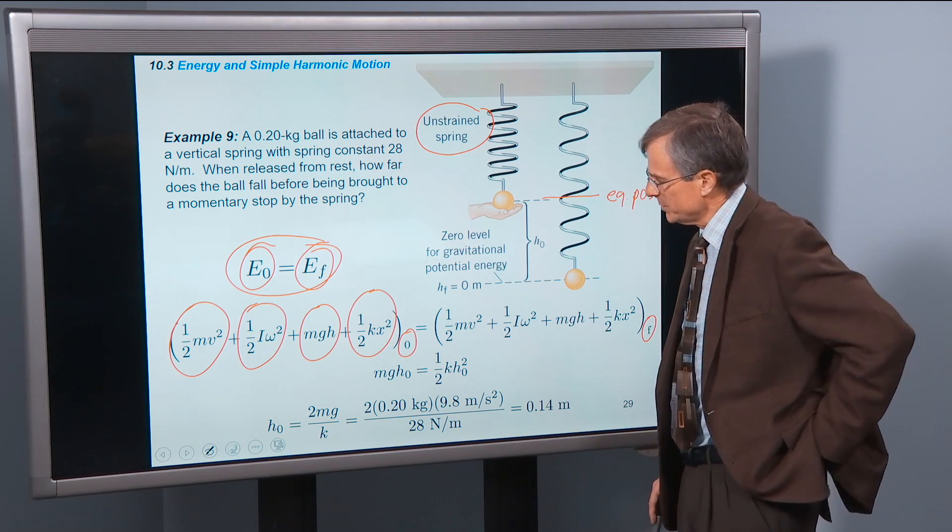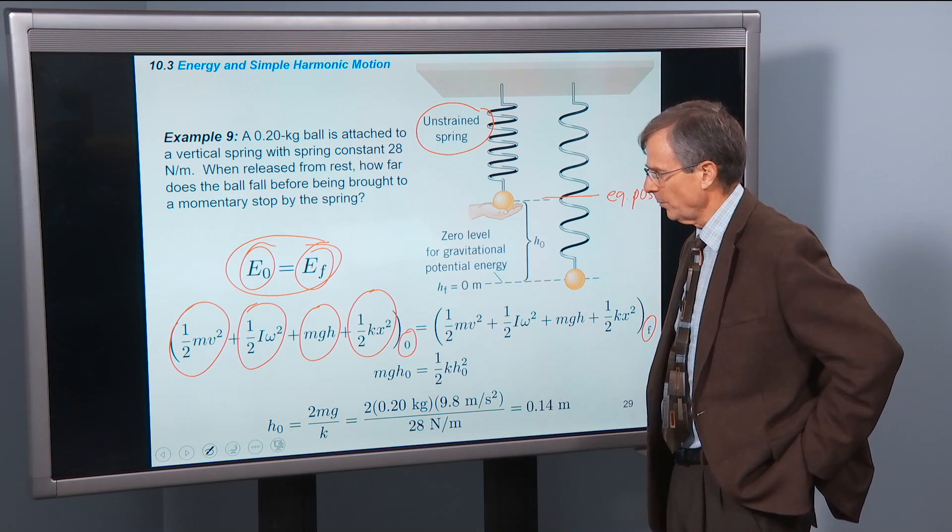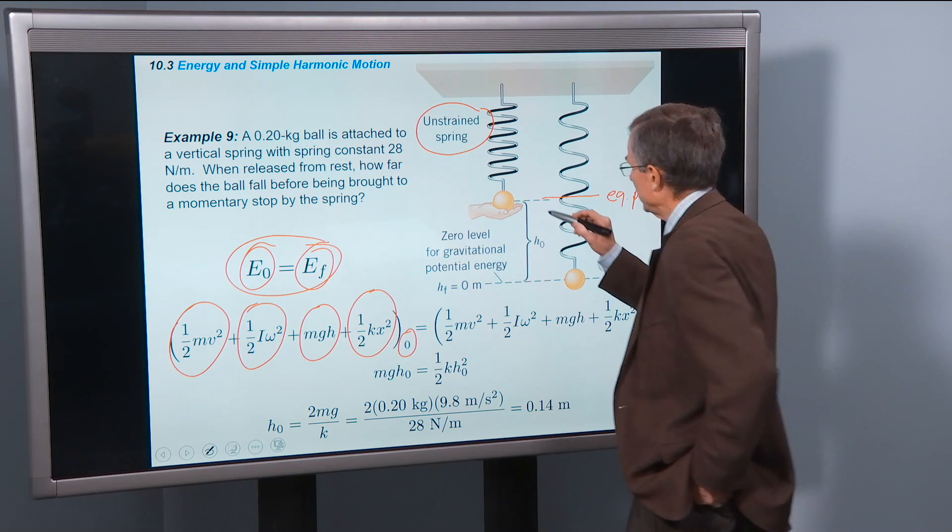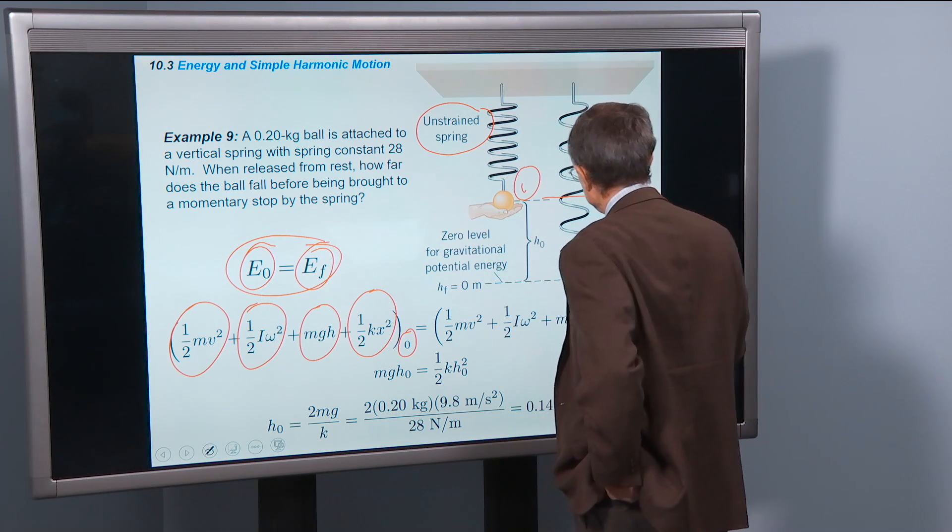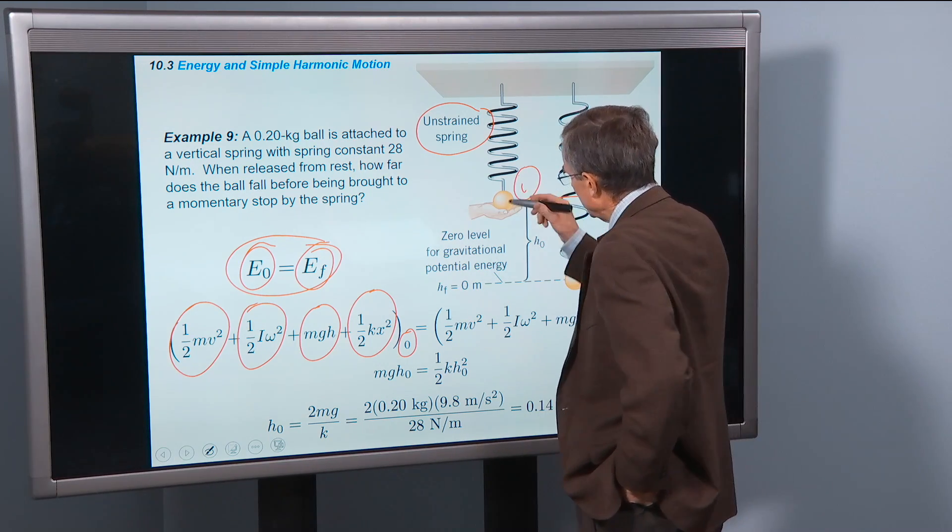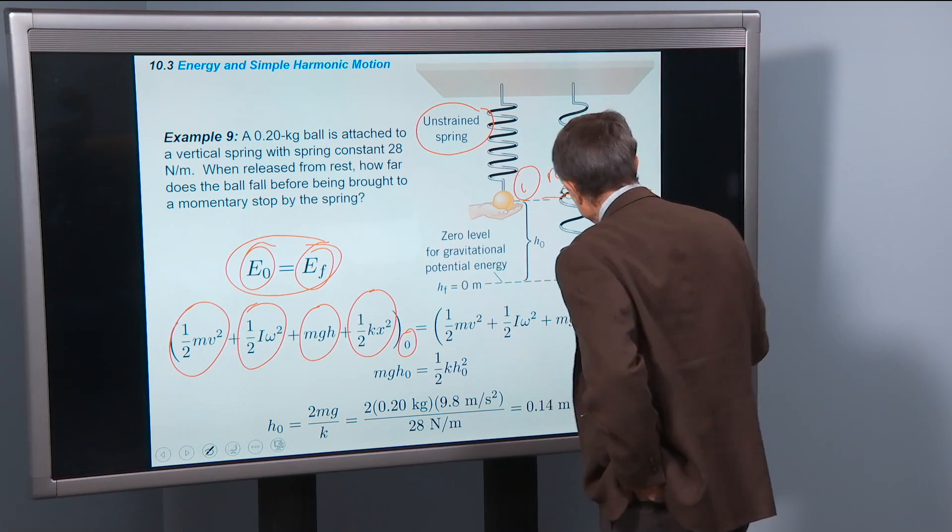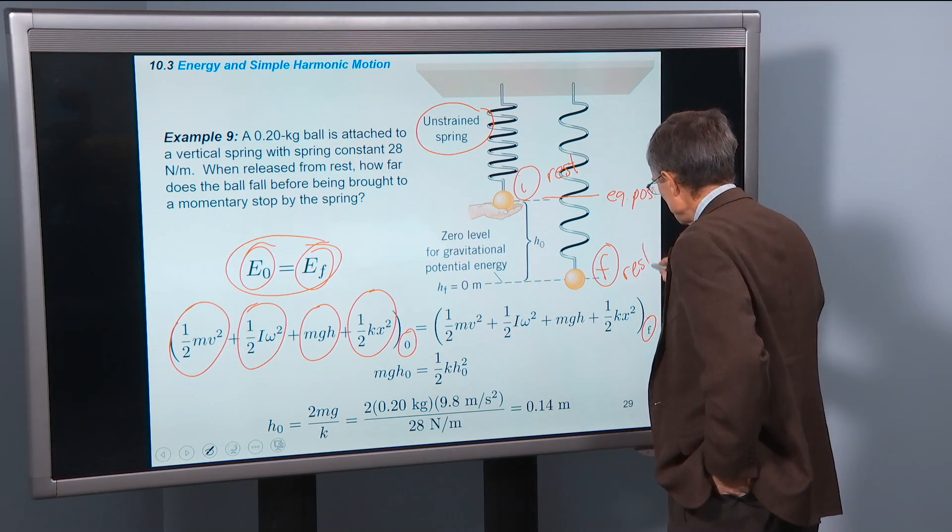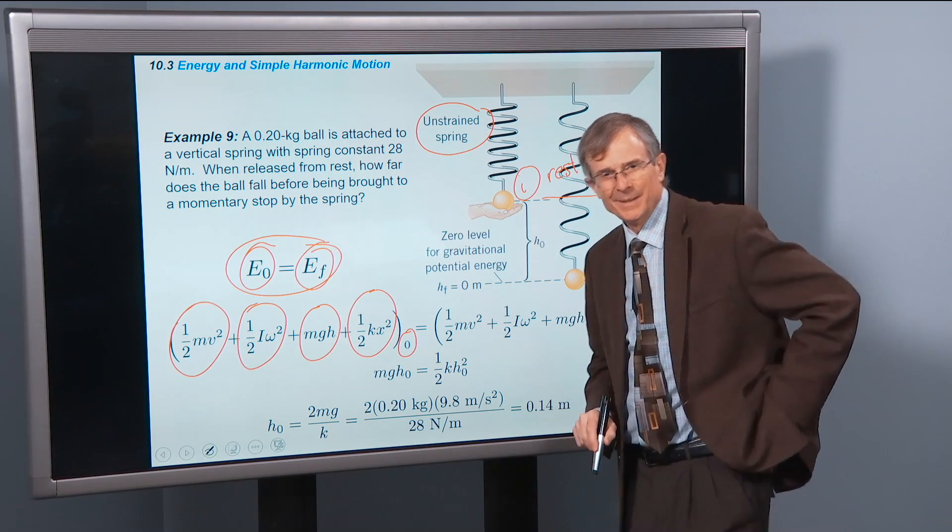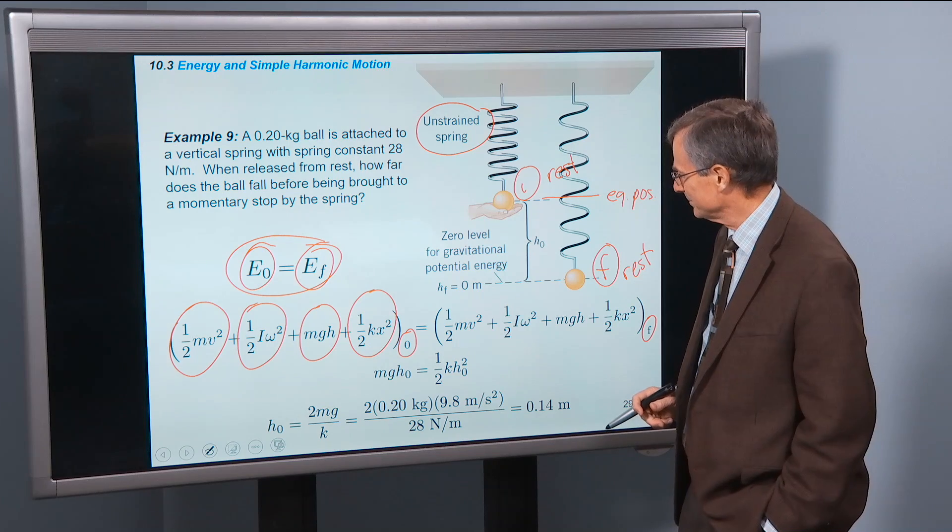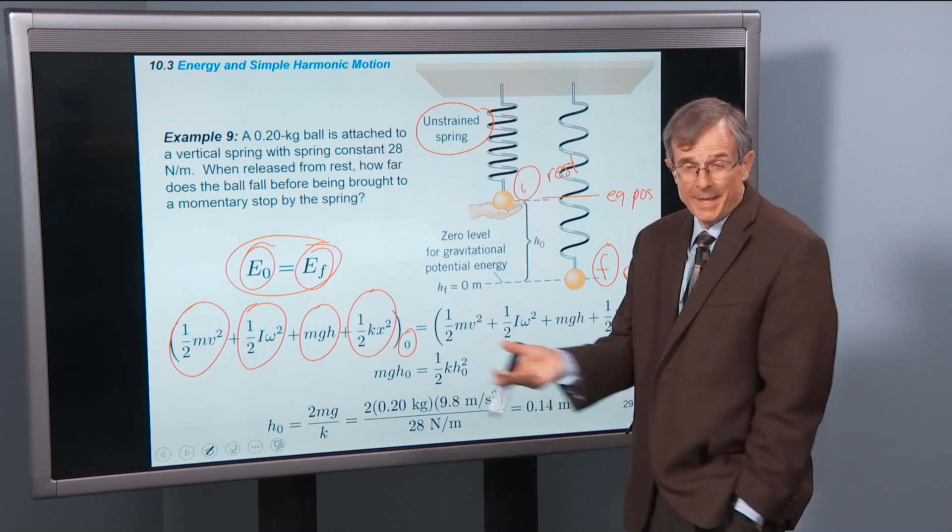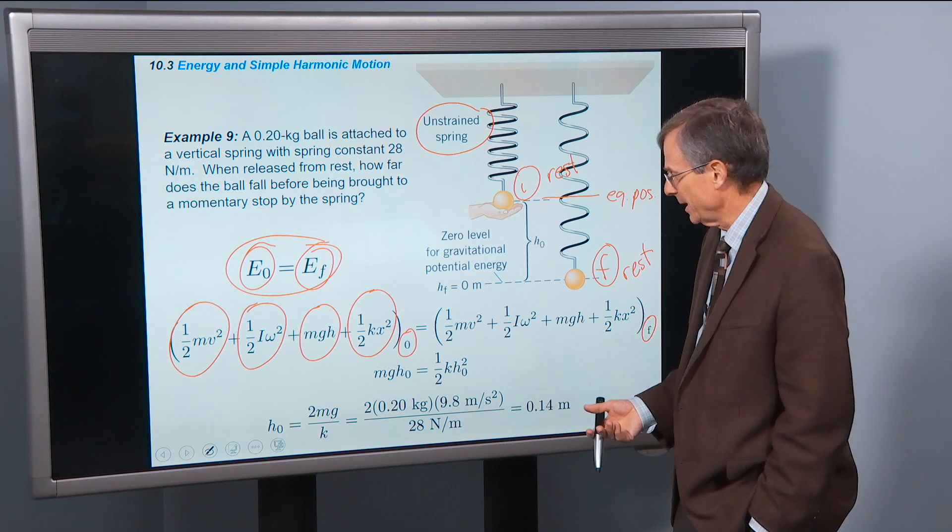So the way to solve the problem is just to figure out what all the variables are at the initial point and at the final point. Now note that at the initial point it's at rest. And at the final point it's also at rest.